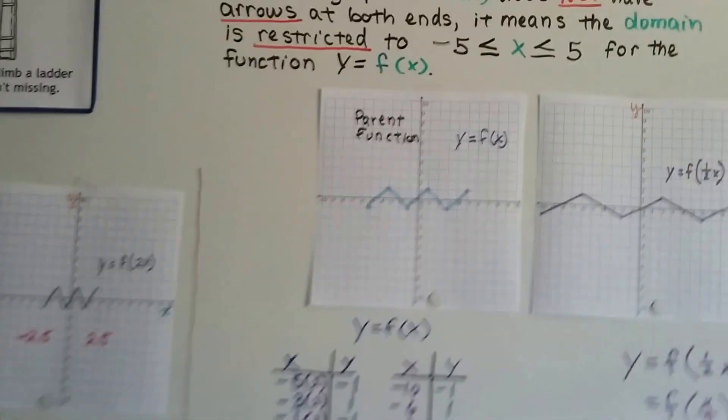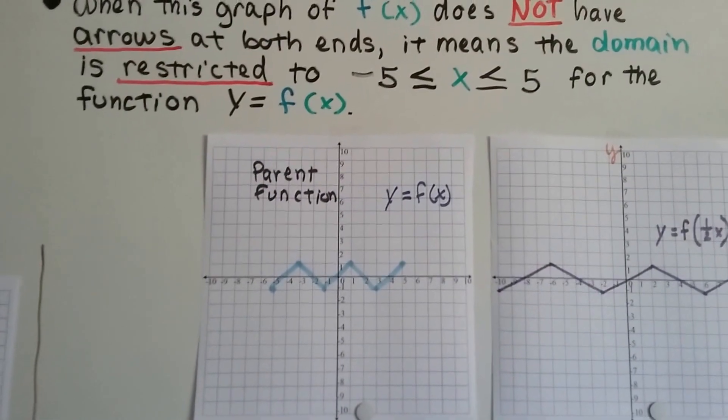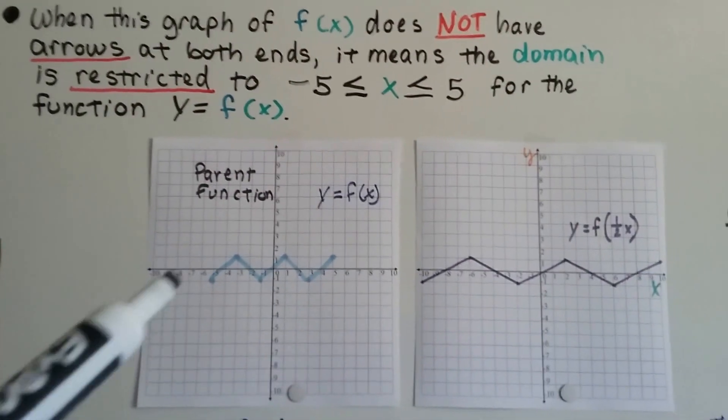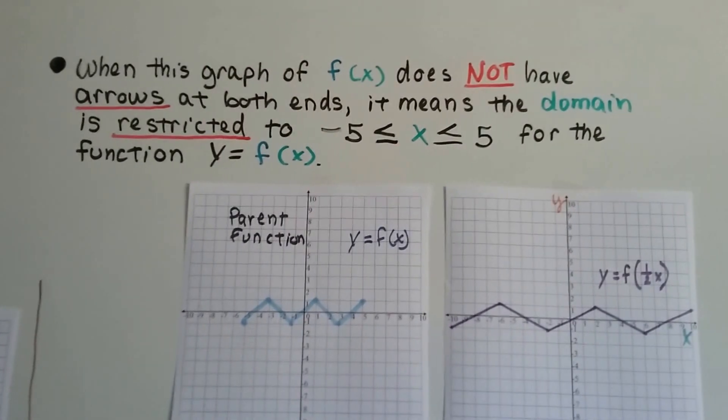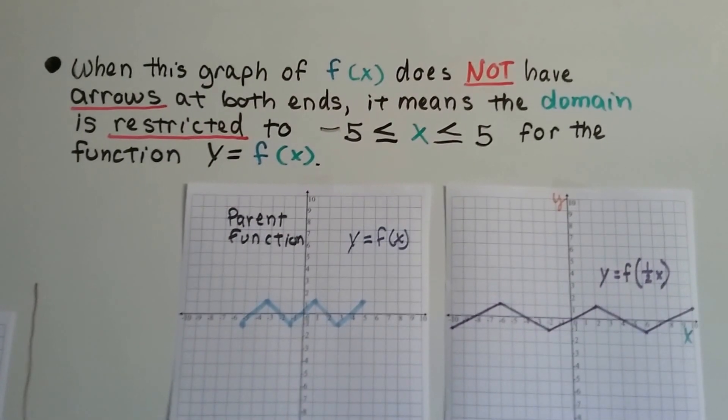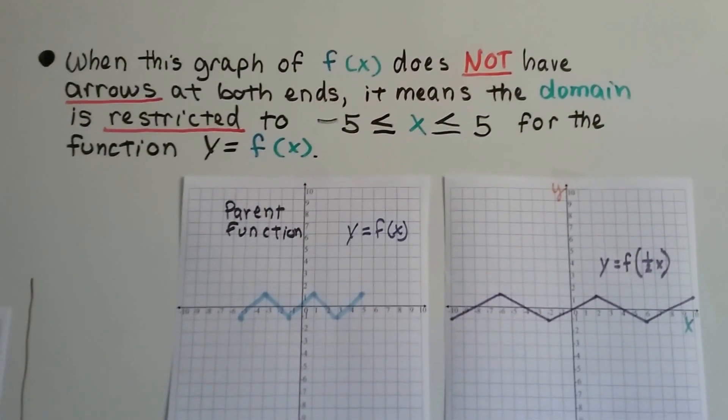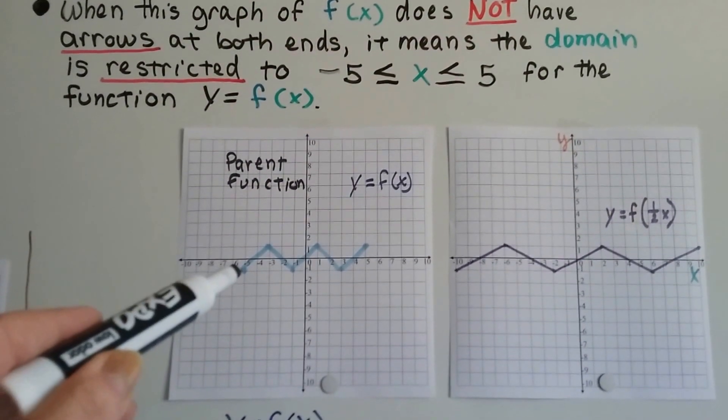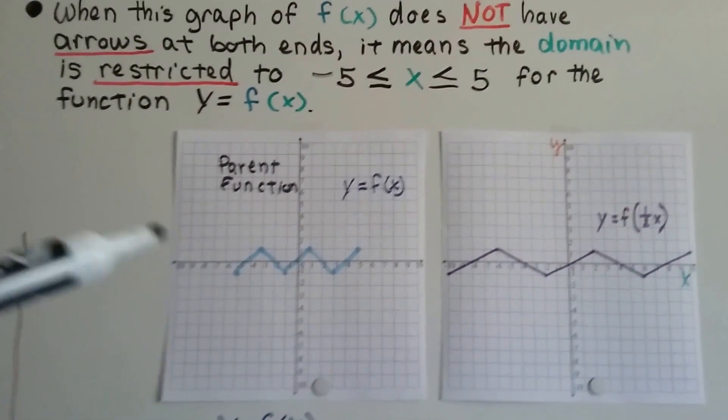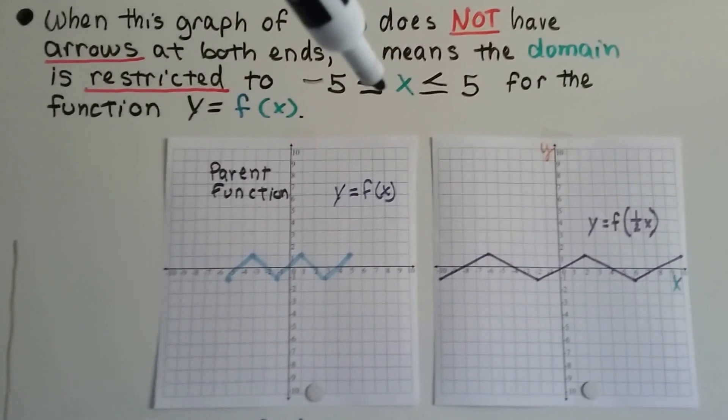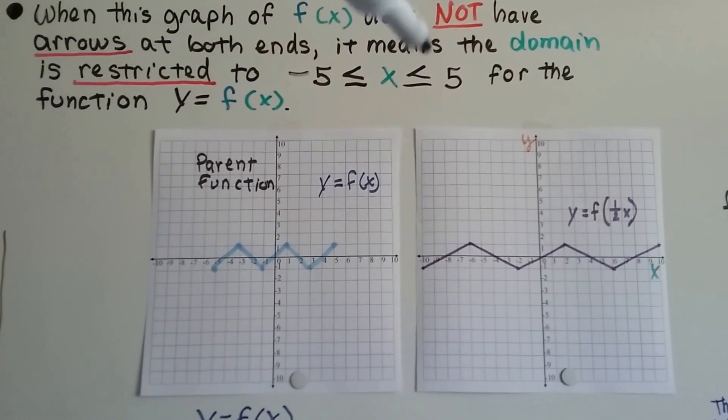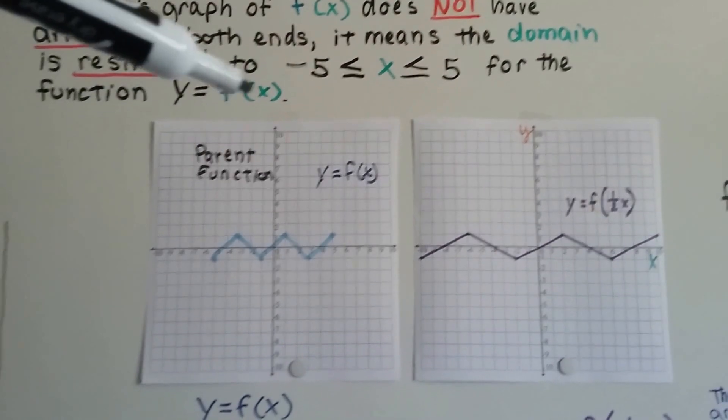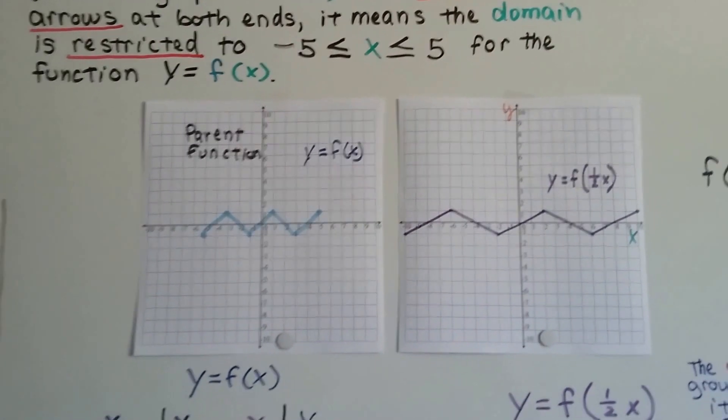Now, the other thing to notice about this graph and the graphs that I've drawn is there's no arrows on the end. On any of them, there's no arrows. When the graph of the function of x does not have arrows at both ends, it means the domain's restricted to that amount. So this is at negative 5 and positive 5, so it's restricted to x being greater or equal to negative 5 or less than or equal to 5. For the function of y equals function of x.